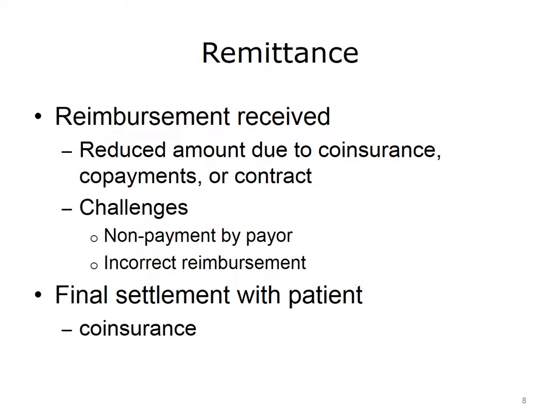After processing by an examiner or adjuster at the payer, reimbursement is sent to the provider. In most cases, reimbursement is less than the amount billed due to copayments, coinsurance, or contractual arrangements. Challenges occur when payment is less than anticipated, since this results in lower-than-expected revenue. After receiving payment from the payer, a final bill is prepared for settlement with the patient, which in most cases represents coinsurance amounts.